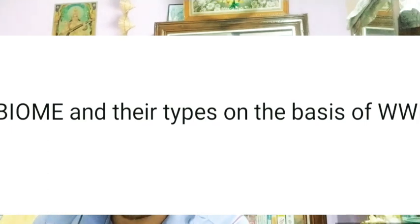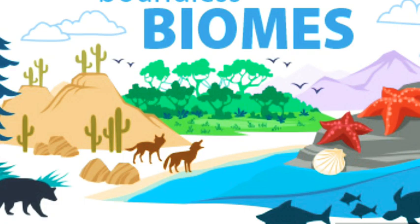First, what is a biome? A biome is the largest unit of environmental spectrum, as defined by Simmons in 1982 in biogeographical processes. The area of a biome is the largest ecological column, encompassing a very high level of biodiversity.